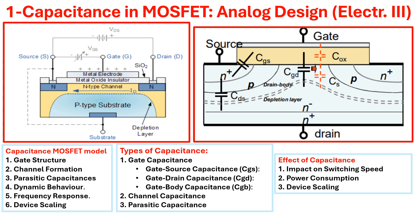Another capacitance formation is due to the channel and its potential nature during the operation of the MOSFET. When a voltage is applied to the gate, it induces an electric field that creates a conductive channel between the source and drain. The channel itself behaves like a capacitor because it stores charge.